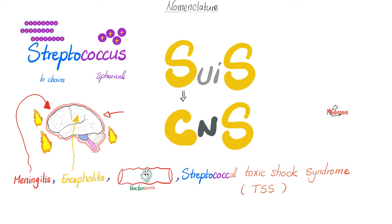Next, Streptococcus suis. It can cause encephalitis, meningitis, and streptococcal toxic shock syndrome — not to be confused with Staph toxic shock syndrome, which was caused by Staph toxic shock syndrome toxin number one. What's encephalitis? Inflammation of the actual brain tissue. Meningitis — inflammation of the coverings surrounding the brain and spinal cord.